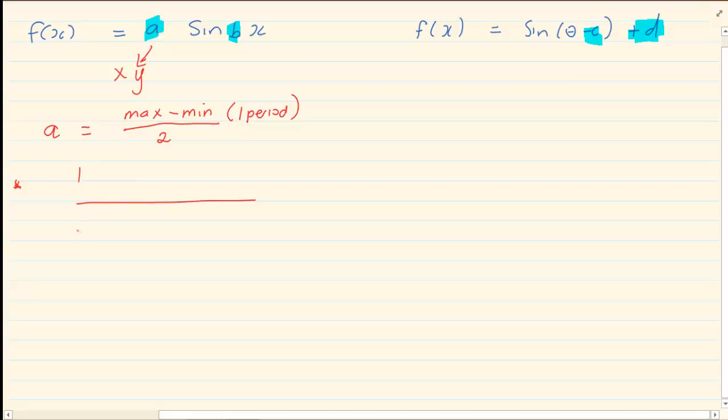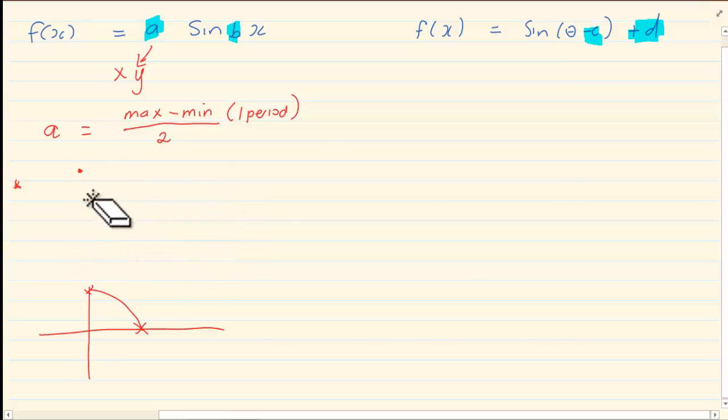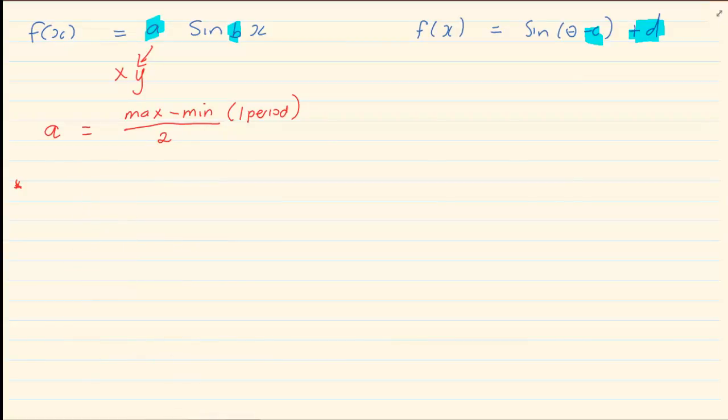But you must be a bit careful because sometimes they don't give you the entire graph. When I am talking of maximum minus minimum, I am talking within one period range. Make sure that when we are talking of maximum minus minimum divided by 2, I am talking of the maximum minus minimum within one period range.